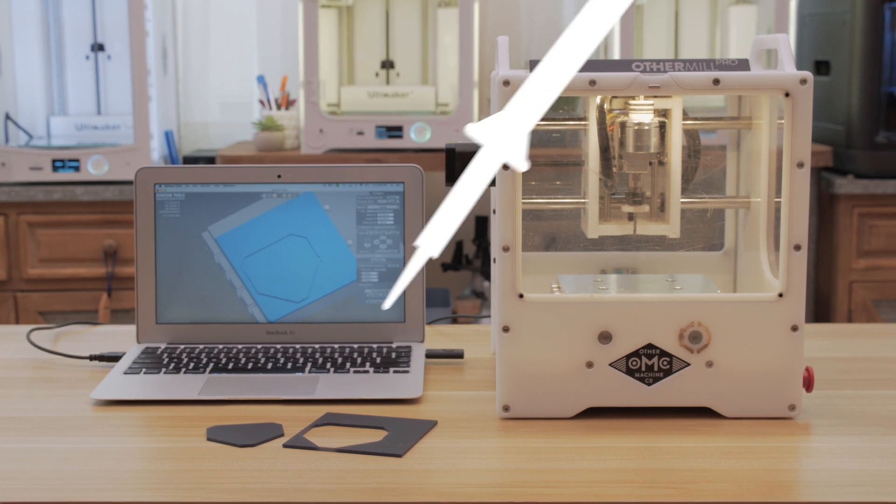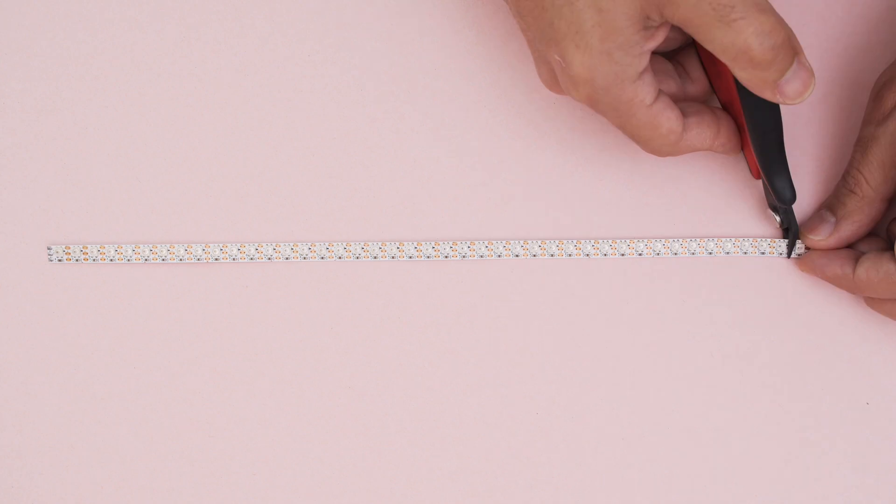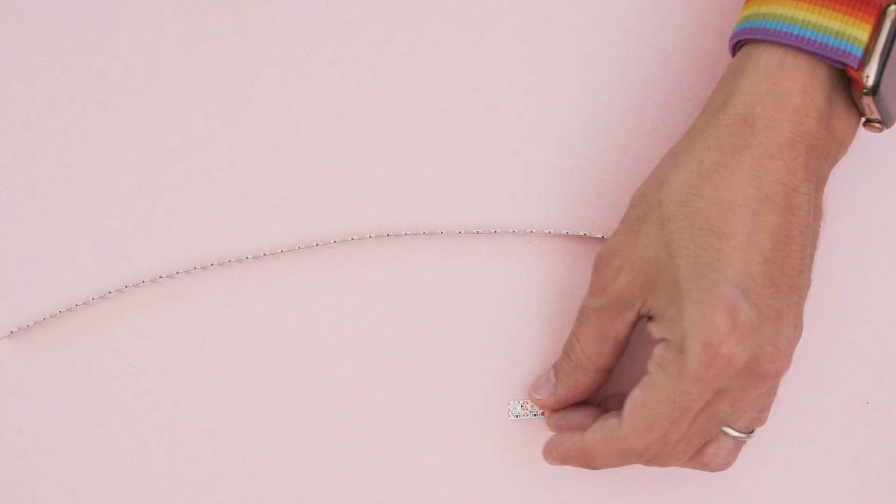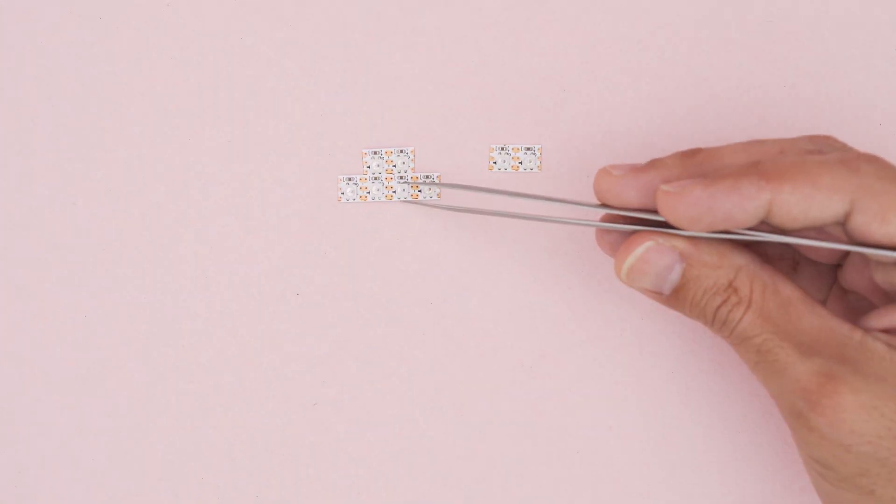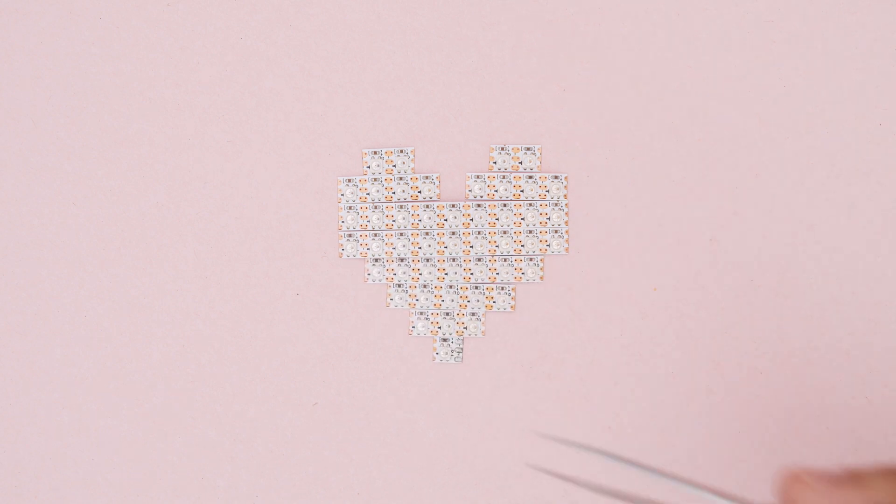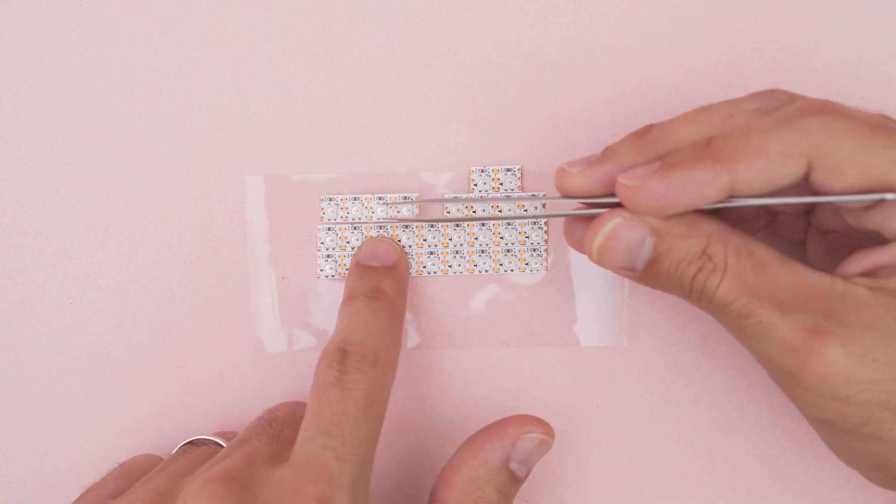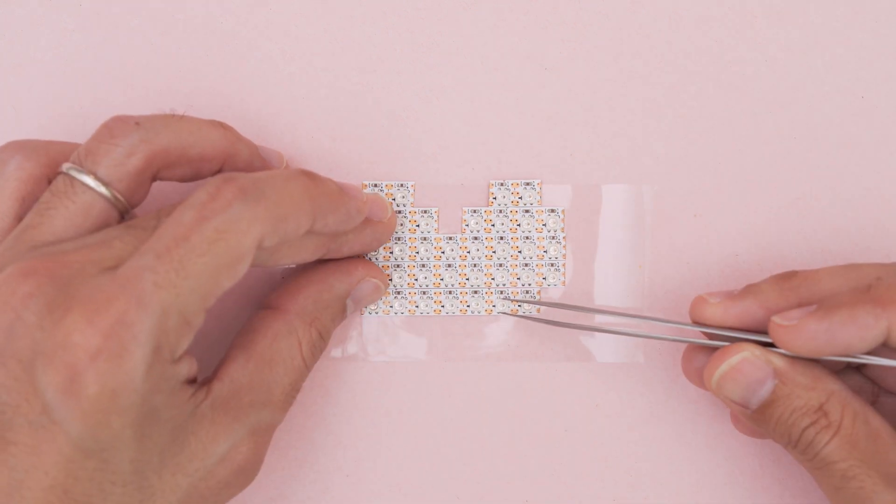We cut a strip of mini skinny NeoPixels with a total of 46 LEDs to create the LED matrix. We cut them up into individual pieces and lay them out to form the shape of a heart. A large piece of packaging tape will allow us to stick them together so they stay in place. We needed to make sure that all of the pieces are nicely lined up with each other.